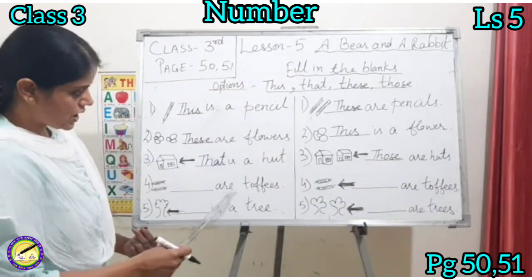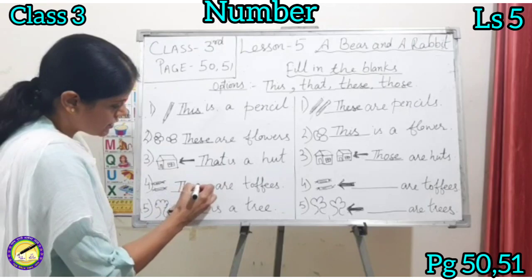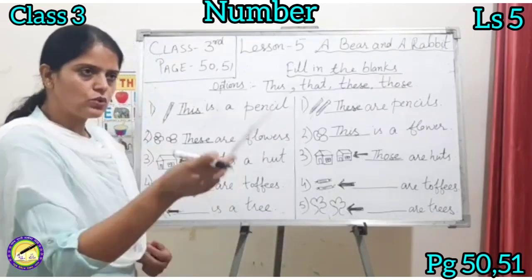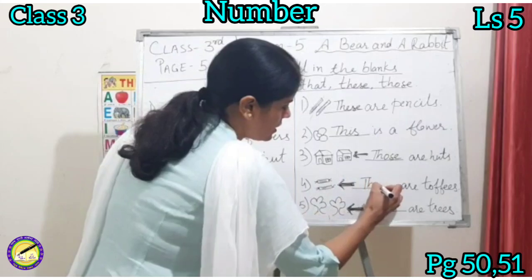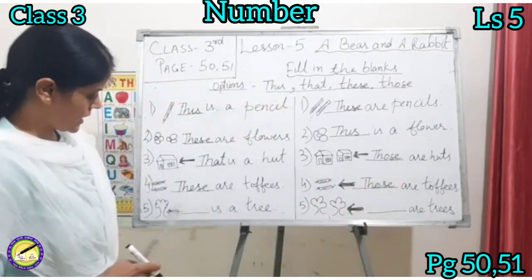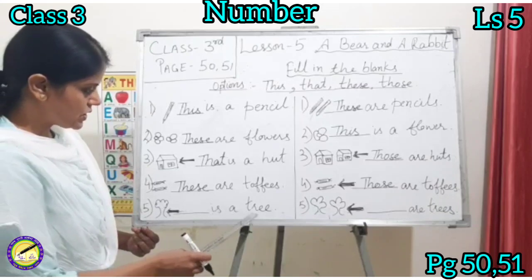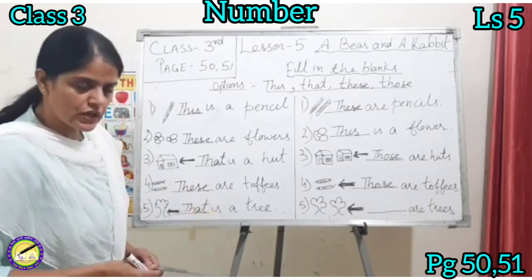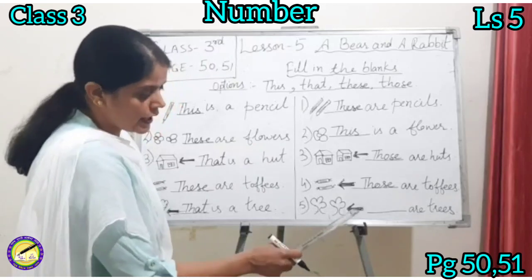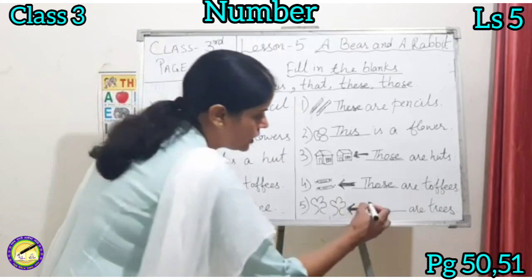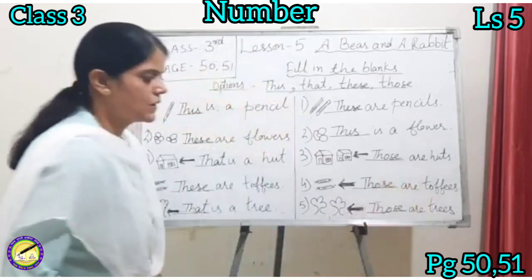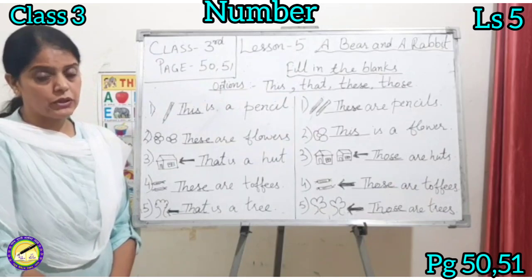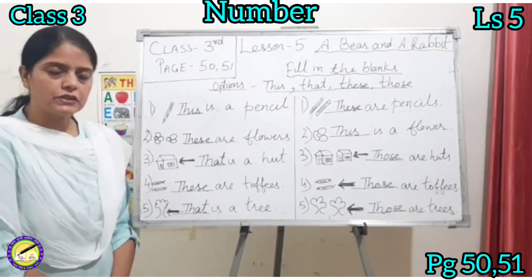Dash are toffees — those are toffees. And the last is: dash is a tree — that is a tree, and those are trees. Okay, so this is all for today. You are to revise page number 50 and 51 that we have revised, and the fill-ups we have discussed. Thank you.